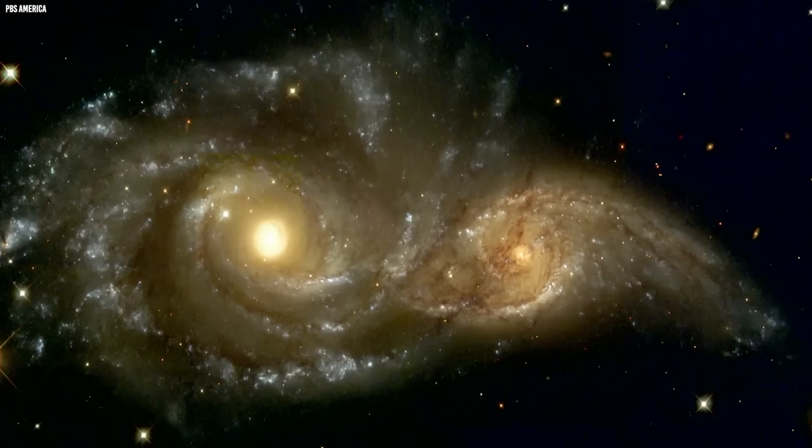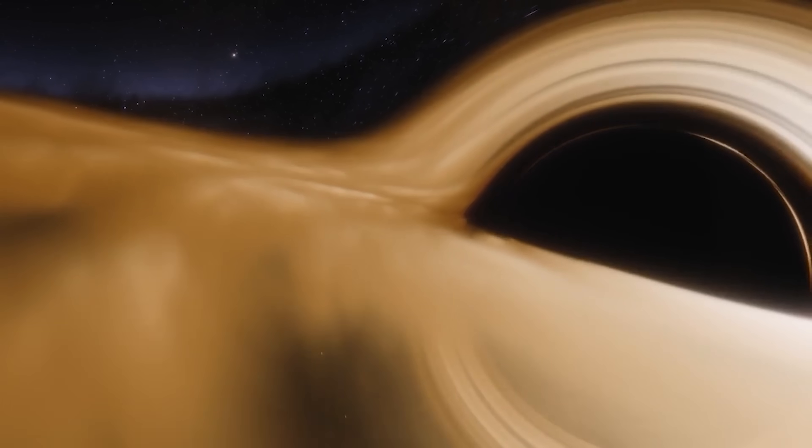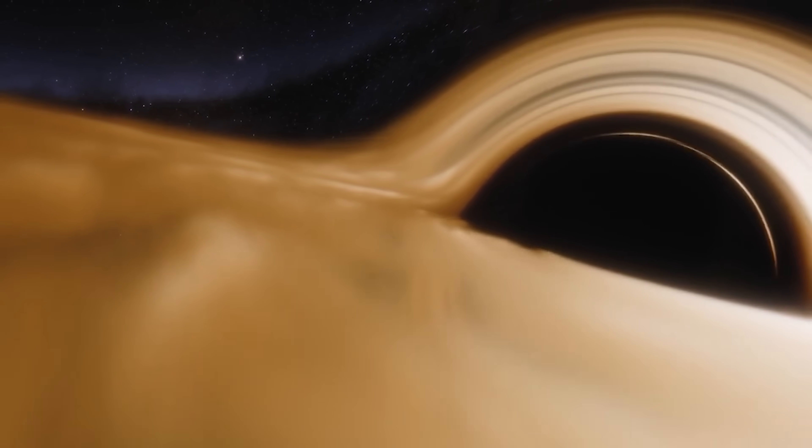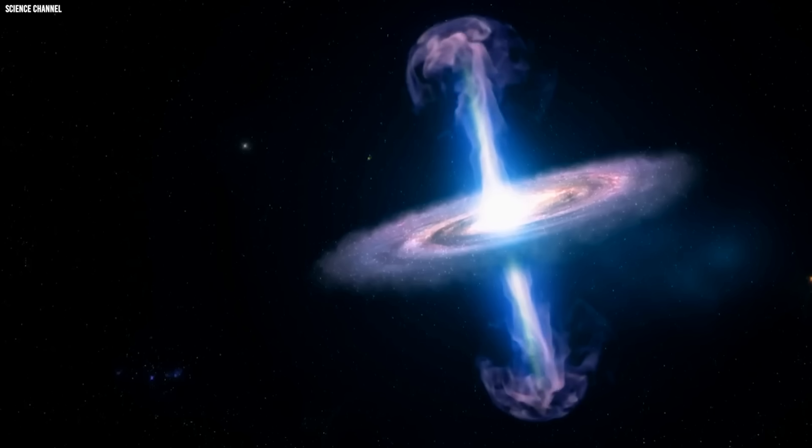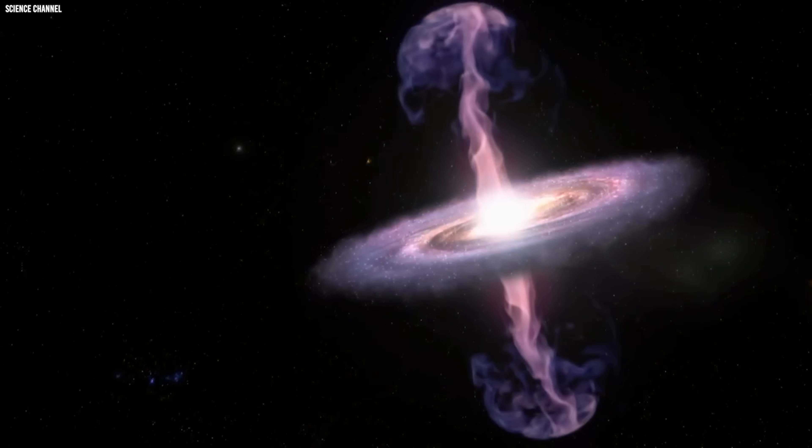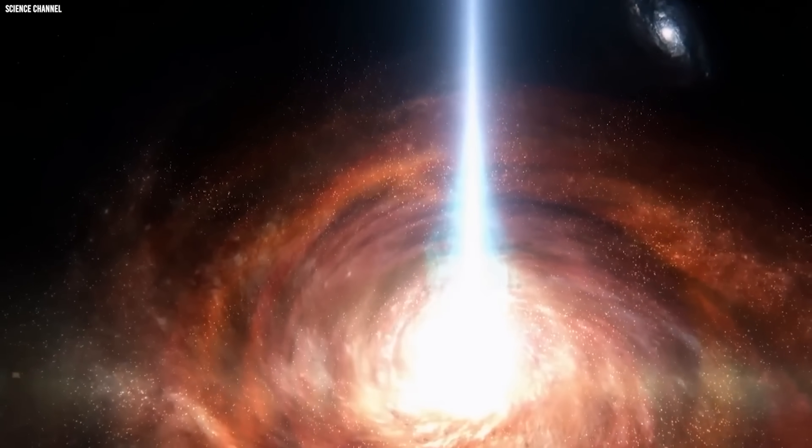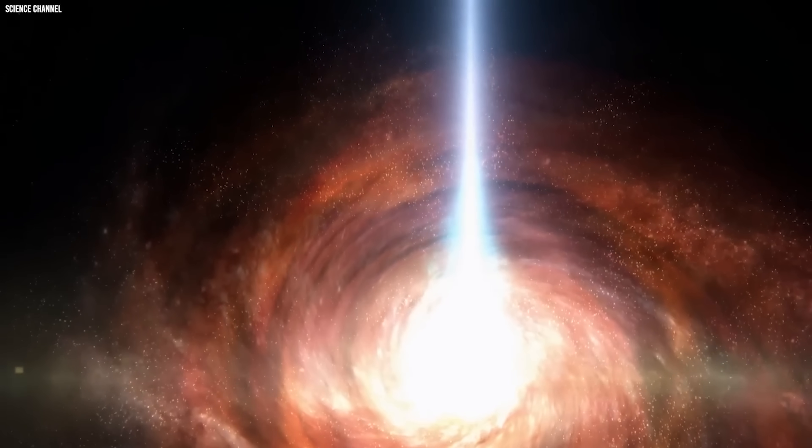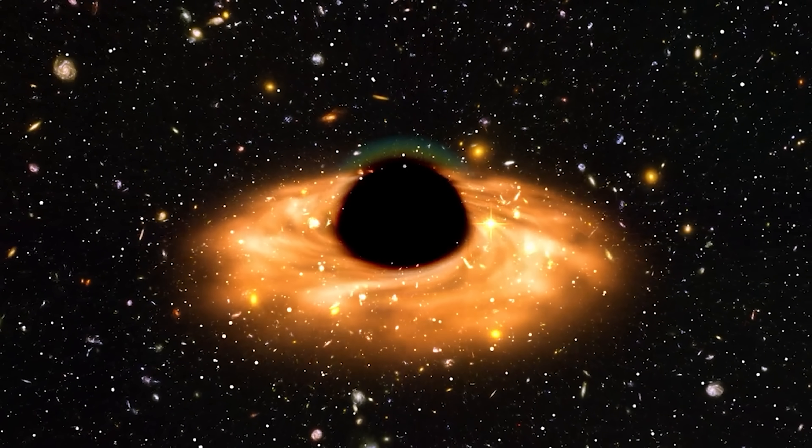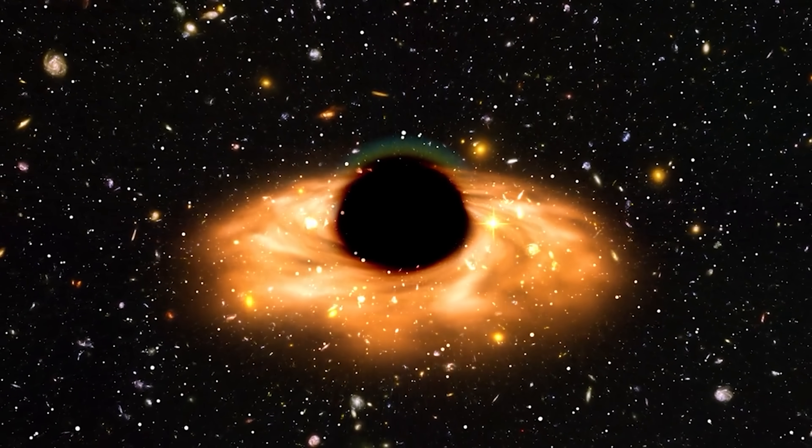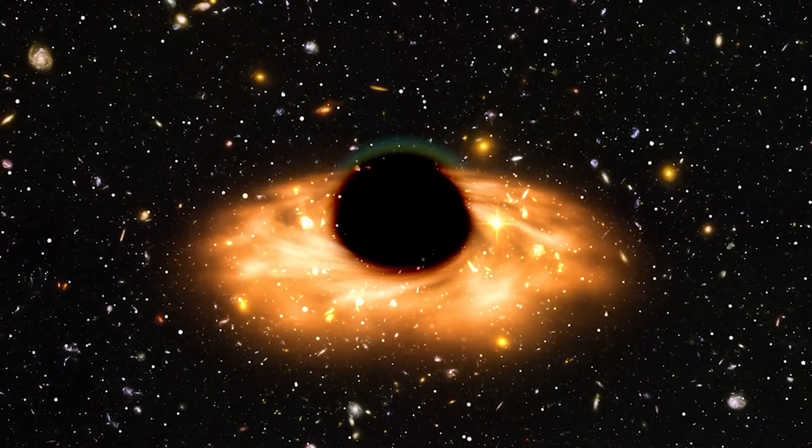Inside this same region, astronomers recently uncovered a bizarre object, now called the Infinity Galaxy, two galaxies colliding in a way that forms a glowing figure-eight shape. Even more astonishing, a supermassive black hole seems to be forming, not in either galaxy's core, but directly between them, hinting at a possible black hole birth process never witnessed before. These are exactly the kinds of rare cosmic moments that can only be found when surveying huge volumes of space.